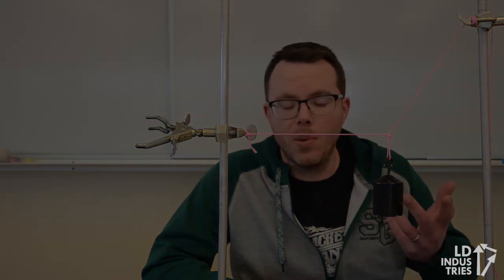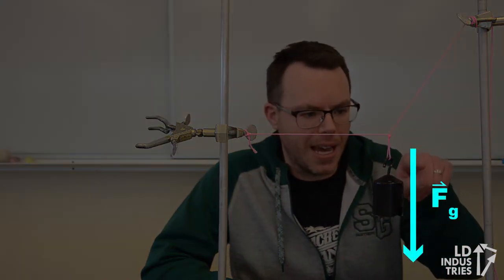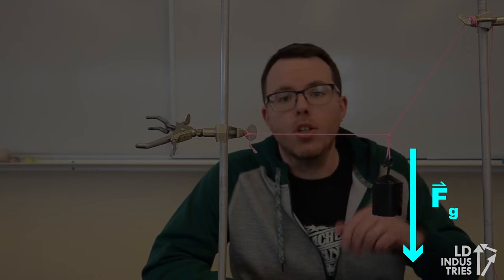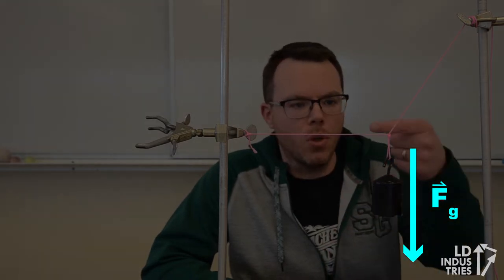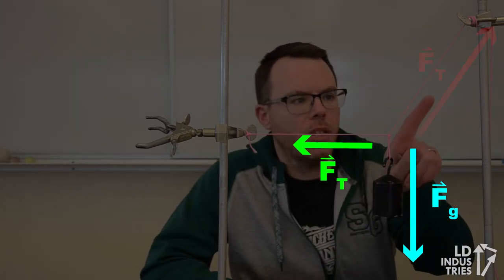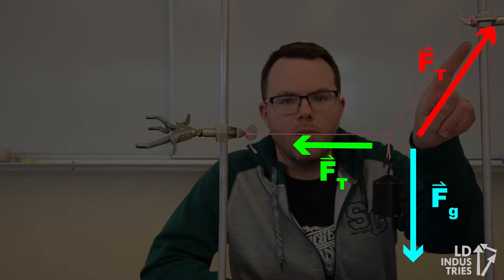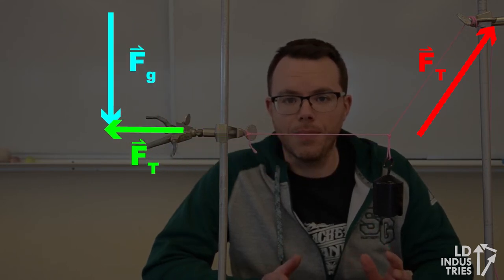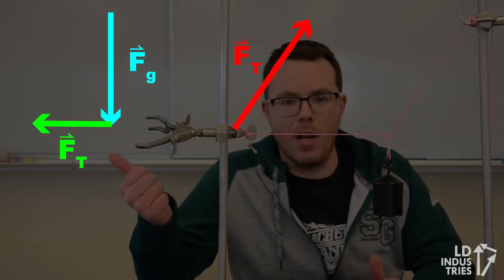The first force I'd put in my free body diagram is the force of gravity acting downwards on this mass. Then there are two forces of tension as well. There's one here for that horizontal force of tension and one for this diagonal force of tension. After I've made my free body diagram, I can redraw those forces into a triangle and it's going to make a right angle triangle.